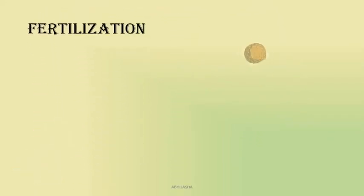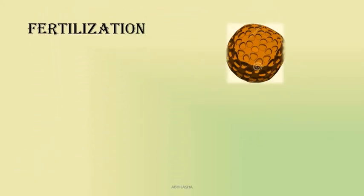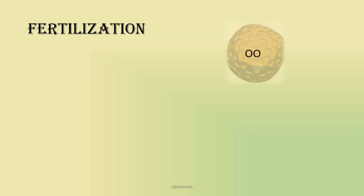You remember the structure of pollen? It has a germ pore and two nuclei on the inside — the vegetative and the generative. This is when pollen is shed at two-cell stage. Sometimes it is also shed at three-cell stage, in which case it already has two male gametes.